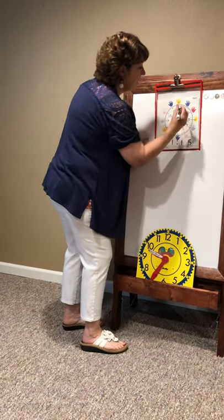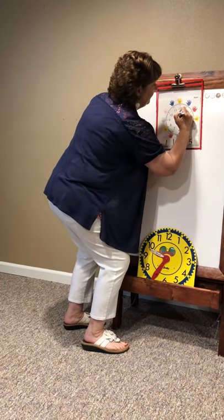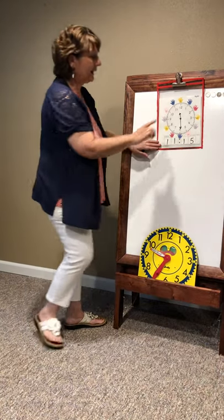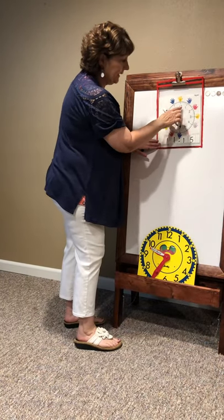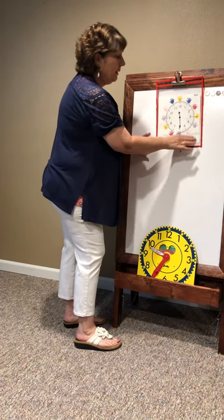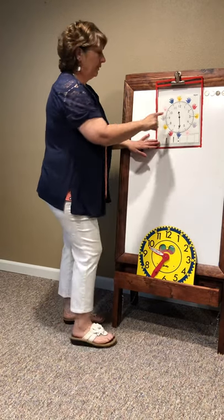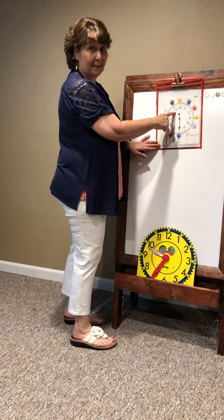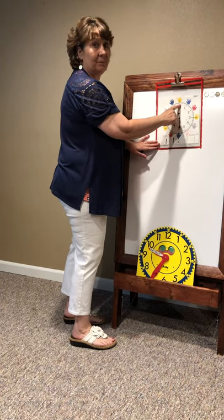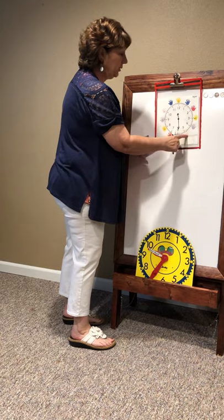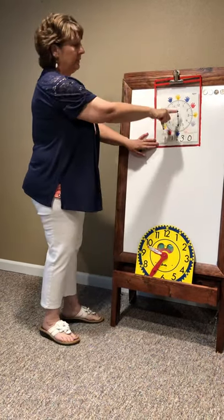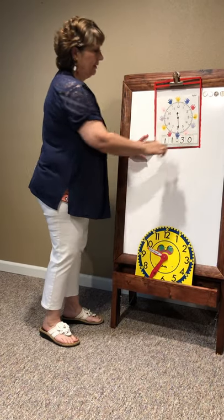Now when we come down here, I'm at half past — it's between 11 and 12, it's after the 11, so my 11 is going to stay. Look for the short hand — what's it past? 11. Look for the long hand, count by fives and make it fast: 5, 10, 15, 20, 25, 30. This would be 11:30.